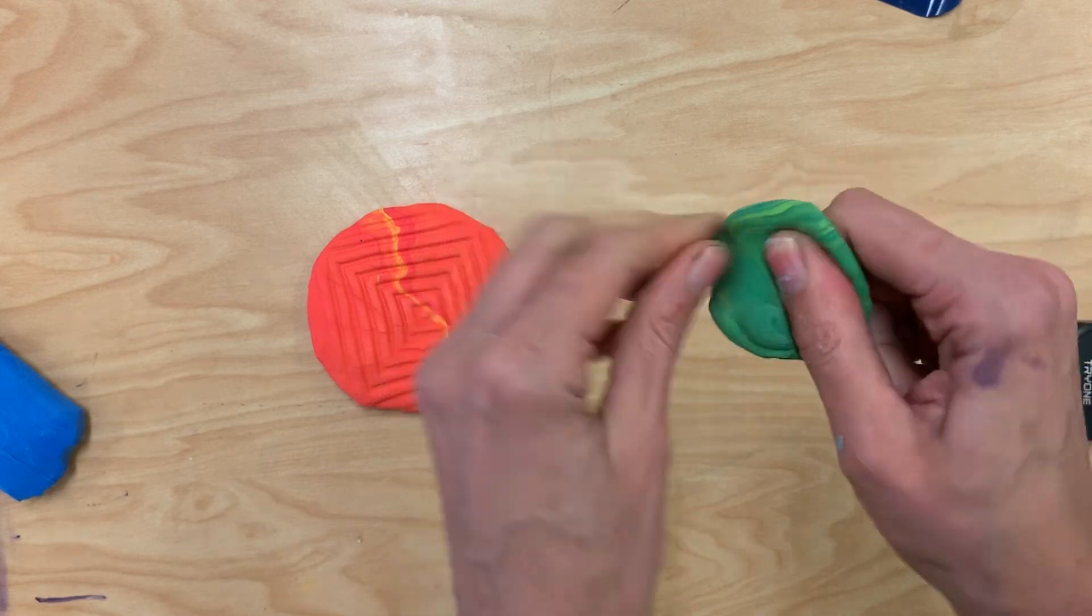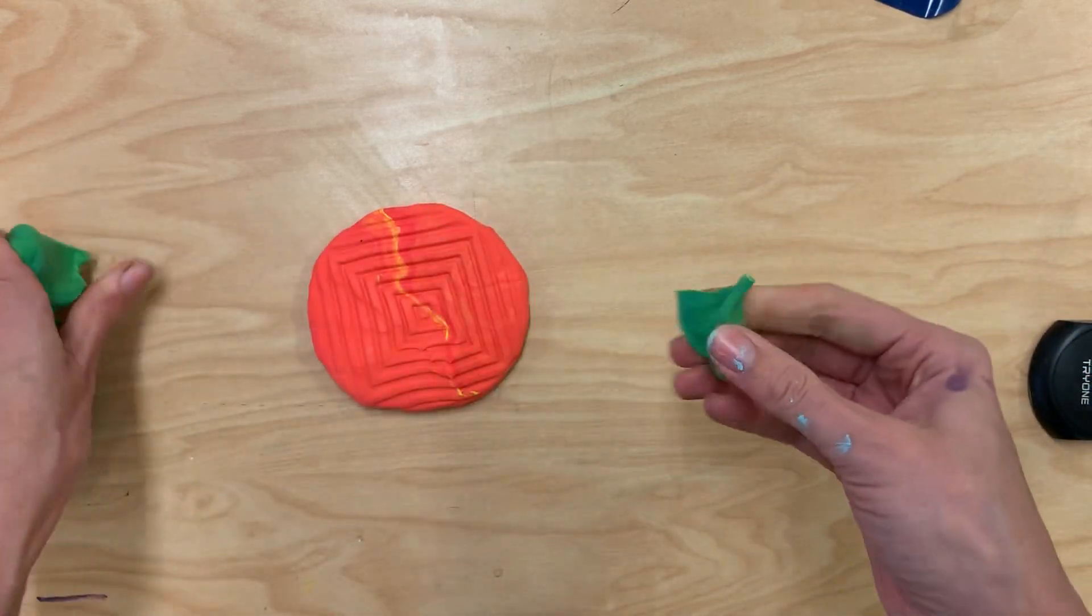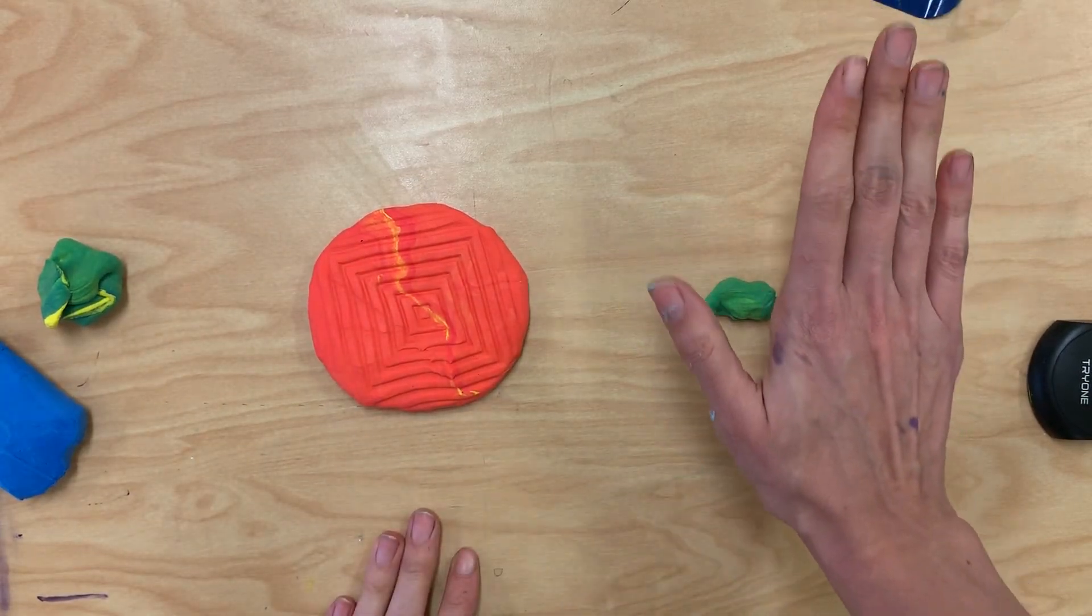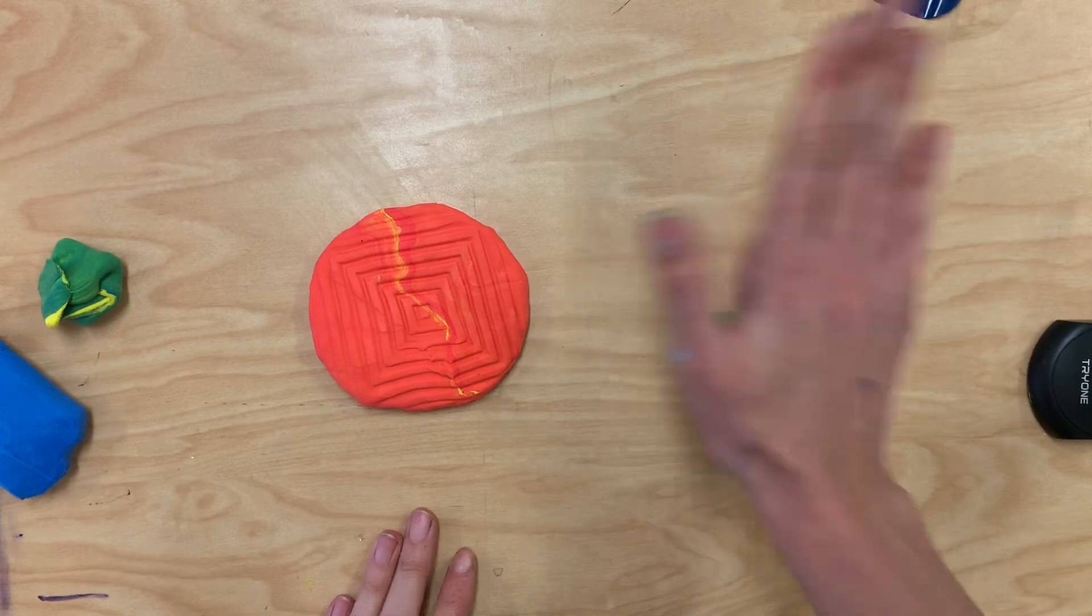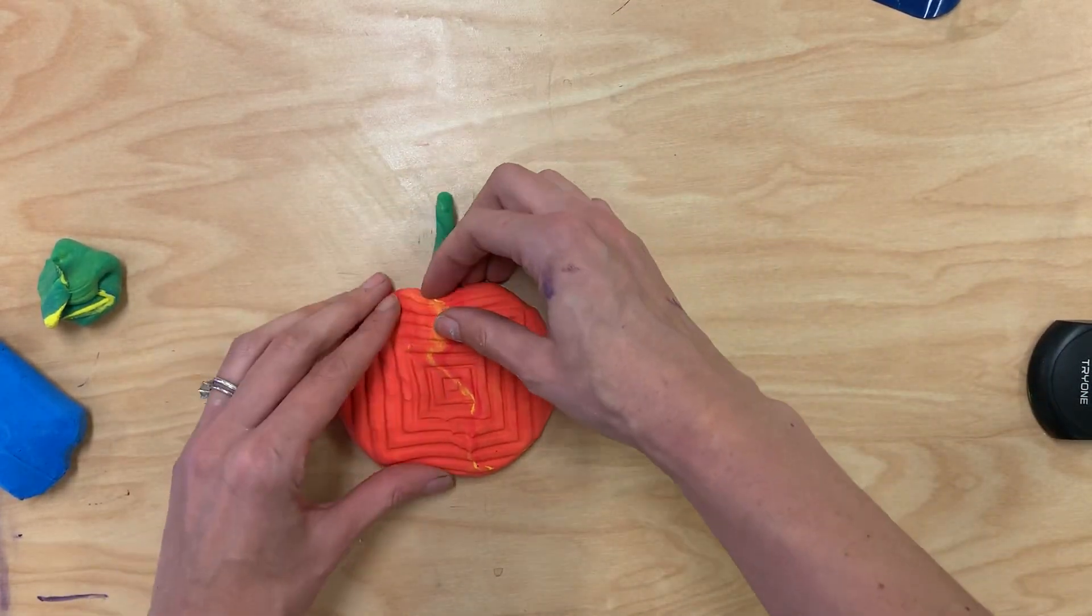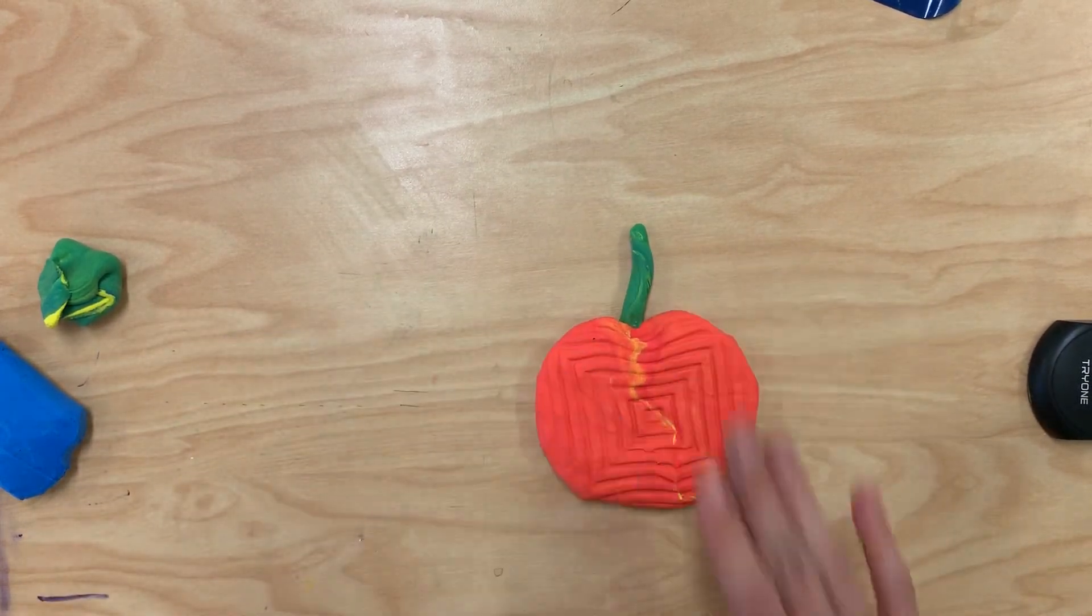Once I have the color I'm looking for, I can take a small piece off—I don't need much—and roll it. I put it on the table using a flat hand and roll back and forth to make a stem, and I can put it behind here for my pumpkin. We have a nice little fall pumpkin.